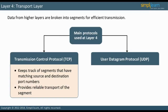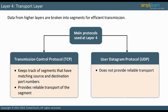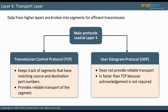User Datagram Protocol, UDP, on the other hand, does not provide reliable transport. UDP is faster than TCP because acknowledgement is not required. Also, UDP does not keep track of a data flow — it is a connectionless protocol. Now let us look more closely at the TCP header in the following slide.